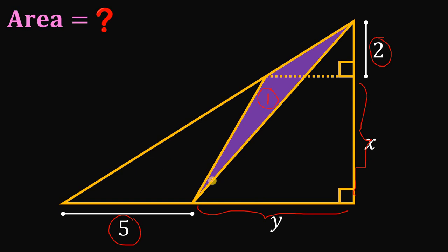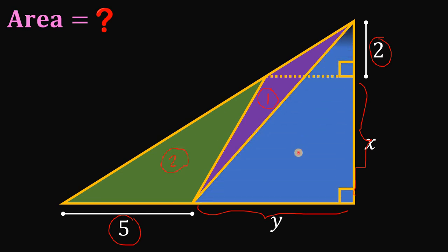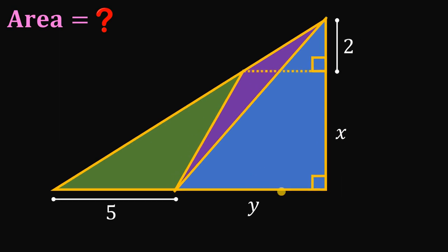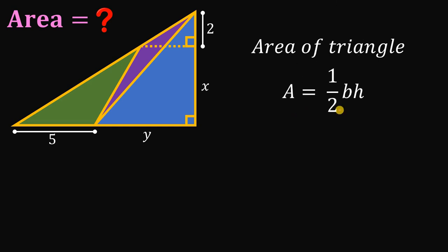Notice that we have 3 small triangles inside our big right triangle. Here's the first one, here's the second triangle, and the third triangle must be right over here. So we have 3 triangles inside our big right triangle, and we will use the concept of the area of a triangle.